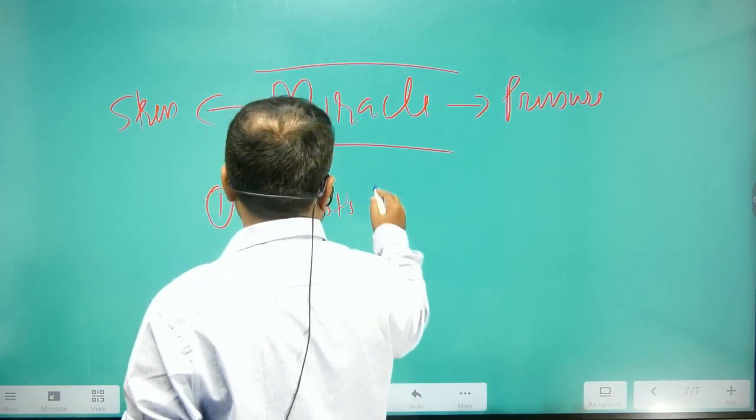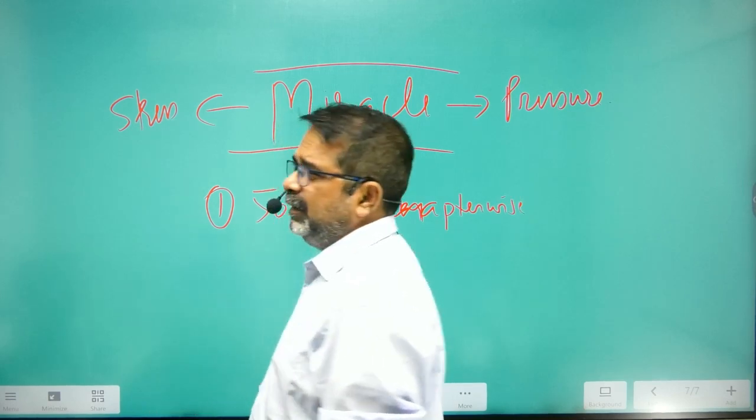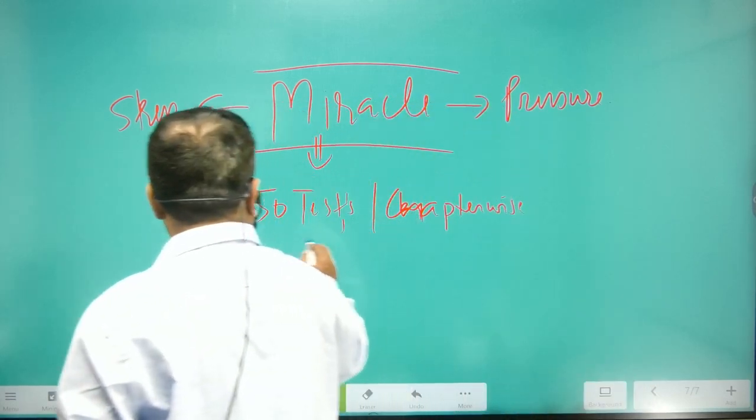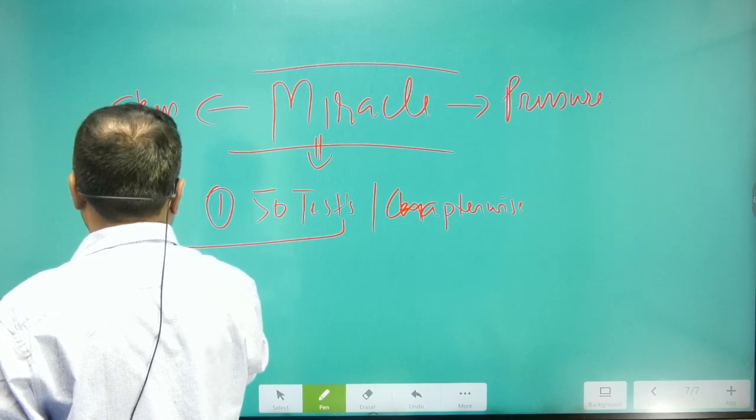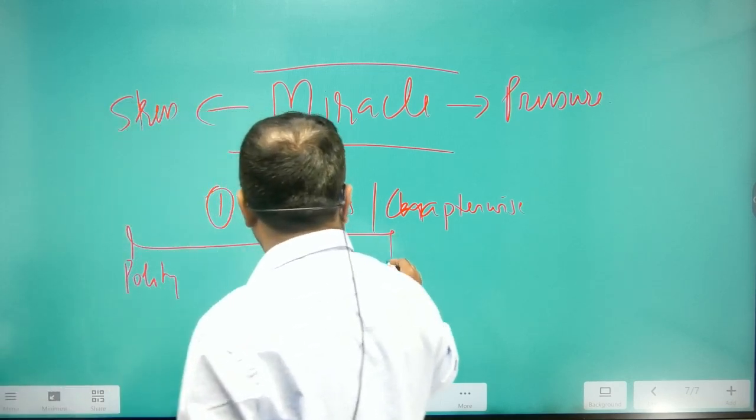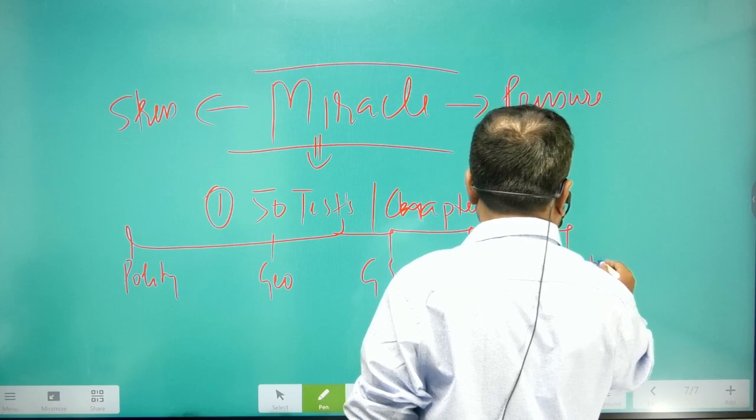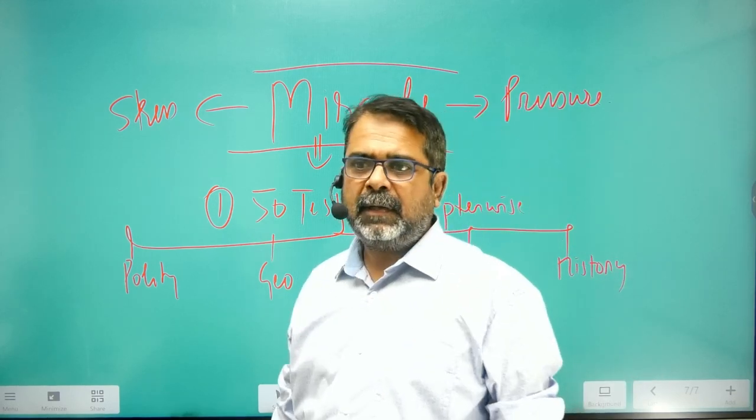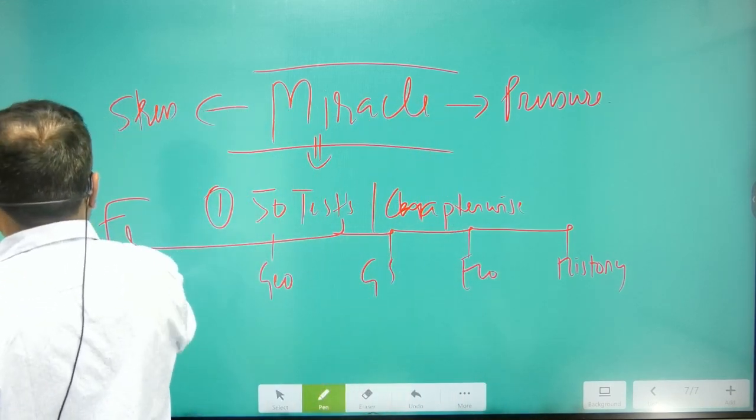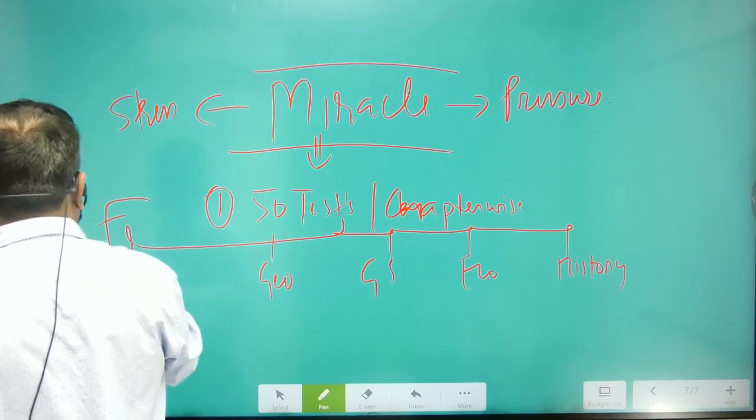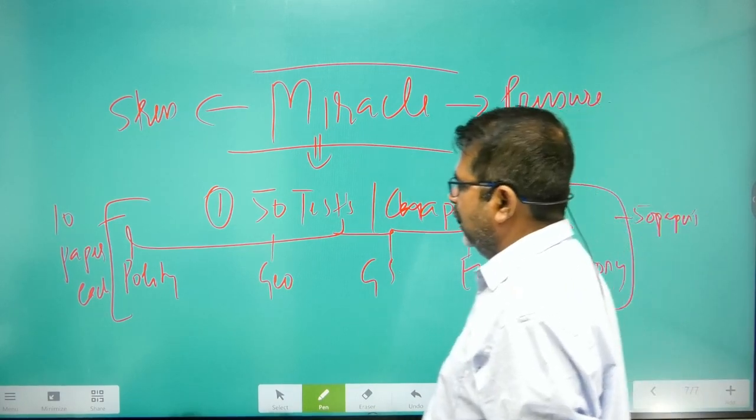50 tests chapter-wise subjects: Polity, Geography, General Science, Economy, and History. 10 test papers each, so total 50 papers. Polity by Mayang sir.